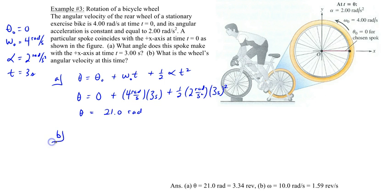Part b is asking for what is the angular velocity at this particular point in time. So hopefully you're thinking of this equation: omega equals omega naught plus alpha t. There might be other ways of solving it. You could probably use omega squared equals omega naught squared plus two times alpha times delta theta, because you now know delta theta. I'm just going to use this because it seems to be simpler for me.